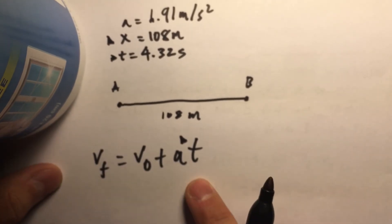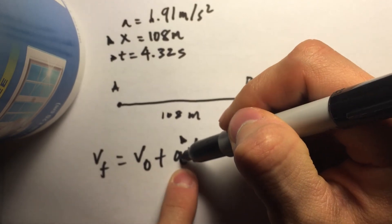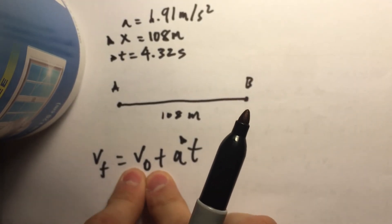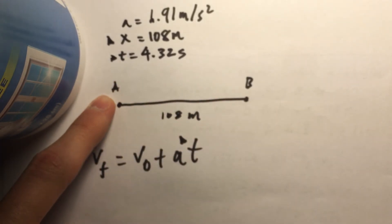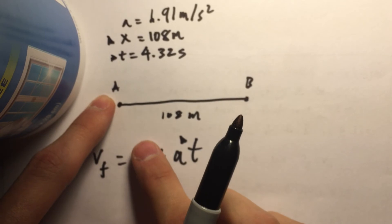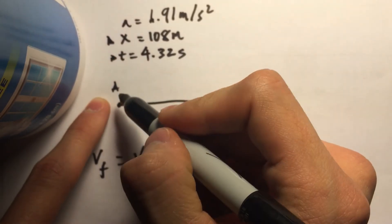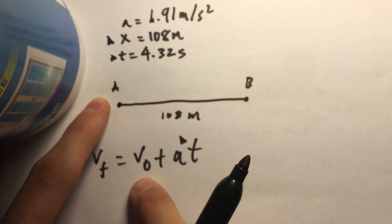Now this equation gives us all that we have to know. We have acceleration, we have a change in time, we have our initial which is, we know it's zero because we start at A. And the problem says that the car travels from A to B in 4.32 seconds. This implies that our V naught is zero.